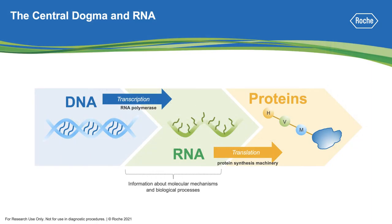The central dogma of molecular biology suggests that the primary role of RNA is to carry genetic information encoded in double-stranded DNA to be translated into proteins, which then carry out biological processes and ultimately cellular functions.